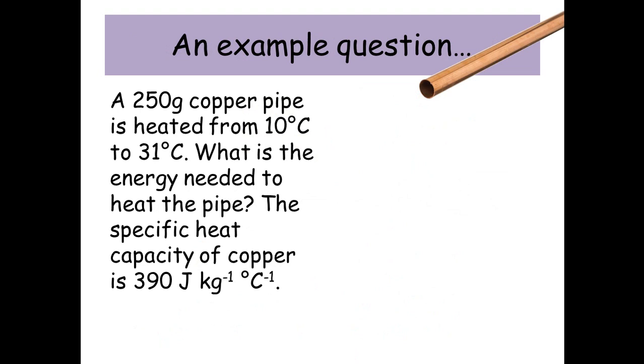Let's look at an example. A 250 gram copper pipe is heated from 10 degrees to 31 degrees. What's the energy needed to heat the pipe? The specific heat capacity of copper is 390 joules per kilogram per degree.